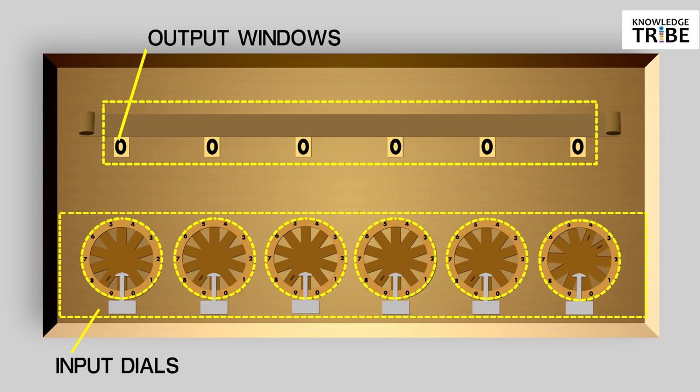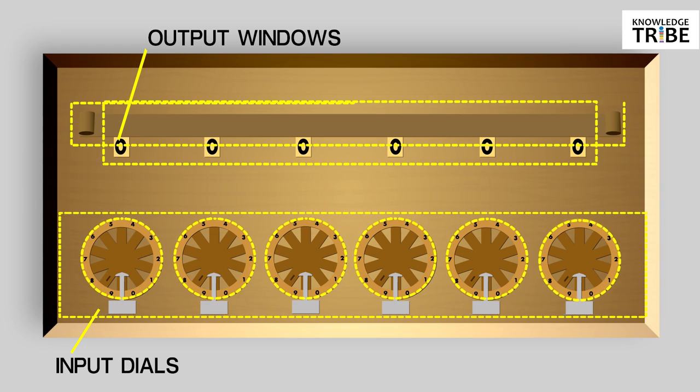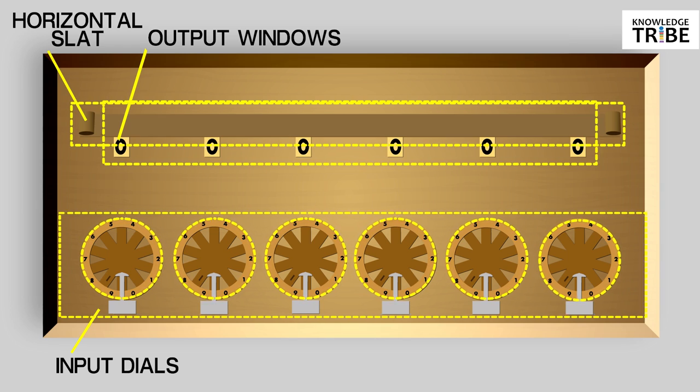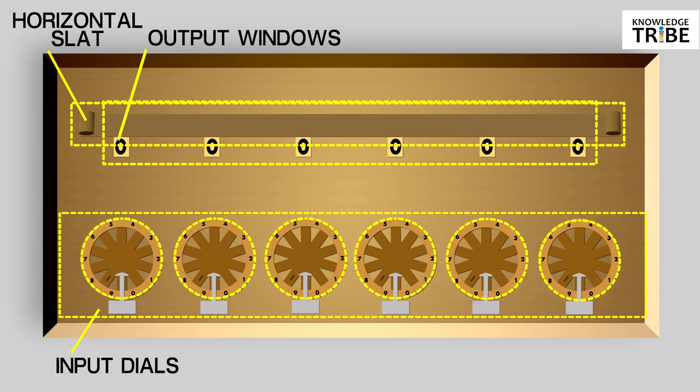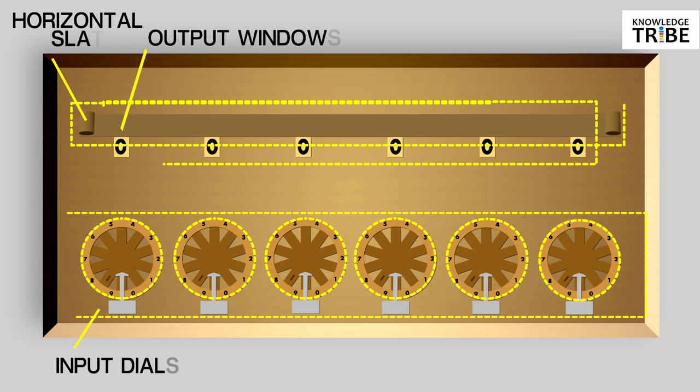Every time when an addition takes place, the top row of the output windows are covered with a horizontal slat. Through the bottom windows, you can see the results of the addition. The top row shows you 9th complement numbers which helps you in doing subtractions.